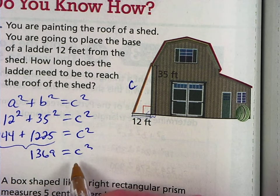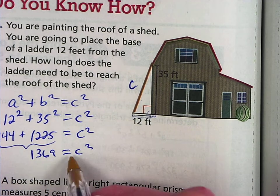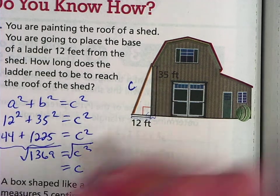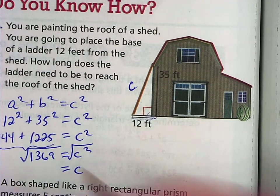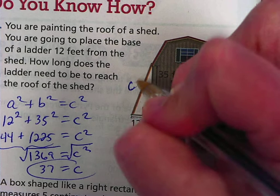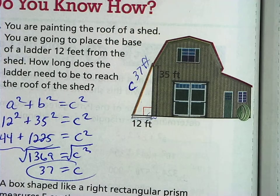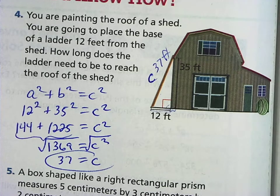And now I only want side C, not C squared, so I'm going to square root both sides. So side C, the length of the ladder, is 37. That means this needs to be 37 feet long to reach the top of the roof right there. Let's take a look at another real life problem.